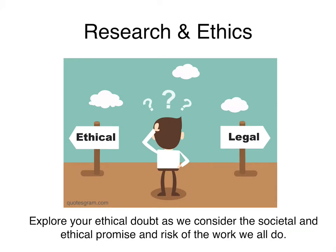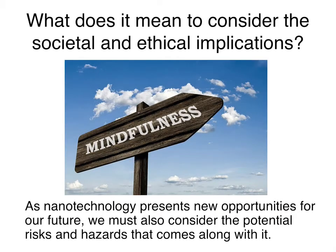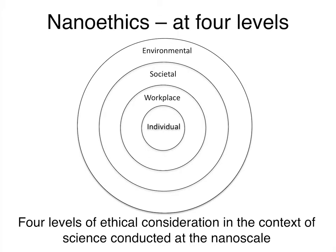In this module, we encourage you to explore your ethical doubt and to increase your reflection on alternative possibilities as we consider the societal and ethical promises and risks of the work we all do. As nanotechnology presents new opportunities for our future, we must also consider the potential risks and hazards that come along with it. Here we present a typology for thinking about ethical considerations in the context of science conducted at the nanoscale — four concentric circles, each representing a level of ethical responsibility: individual, workplace, societal, and environmental.